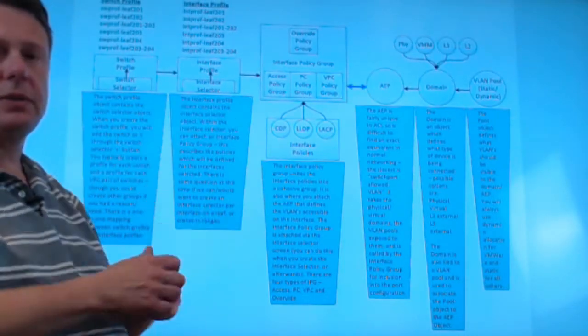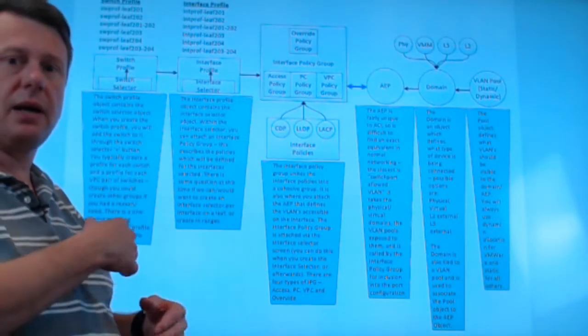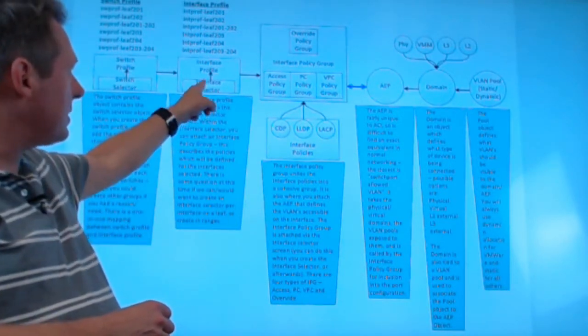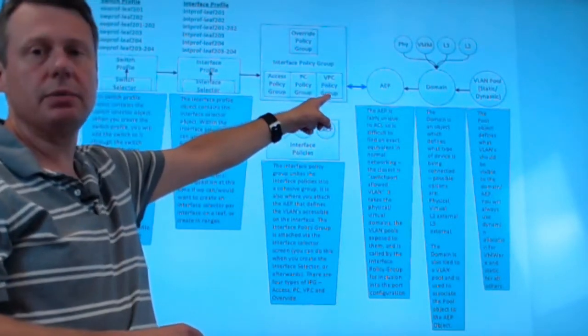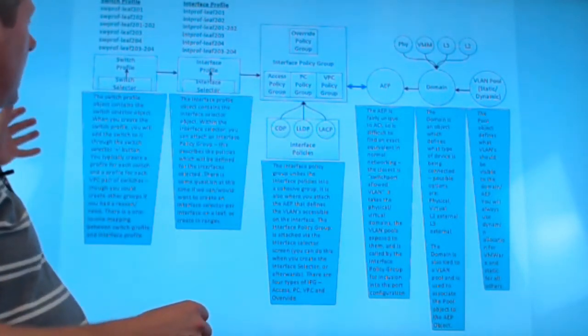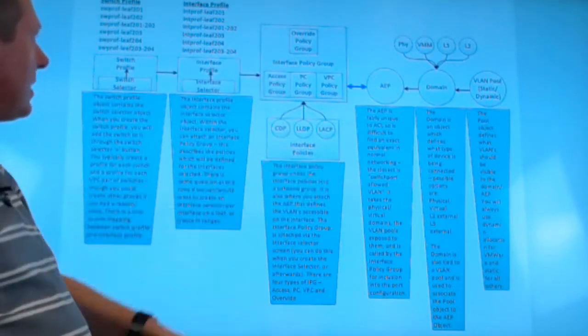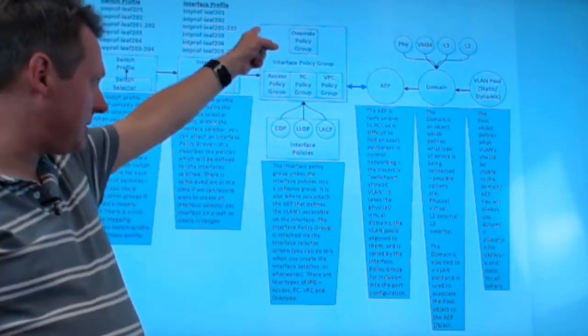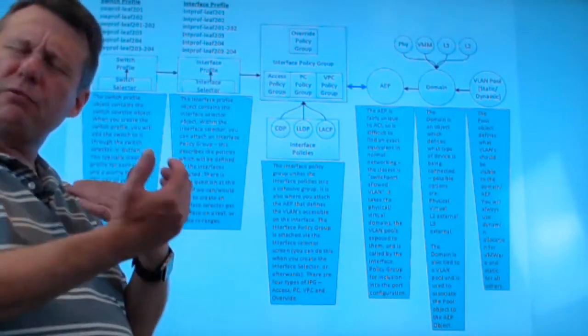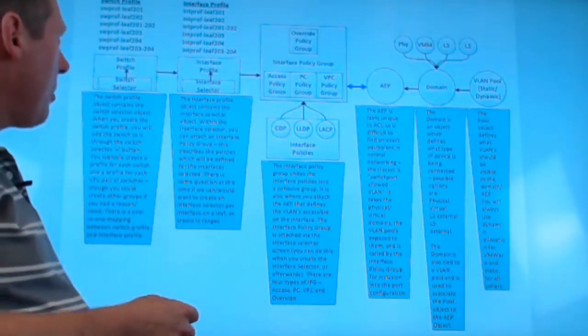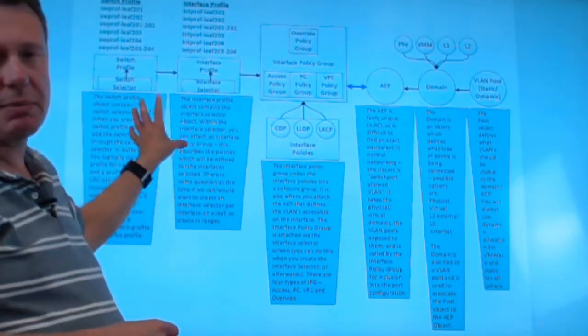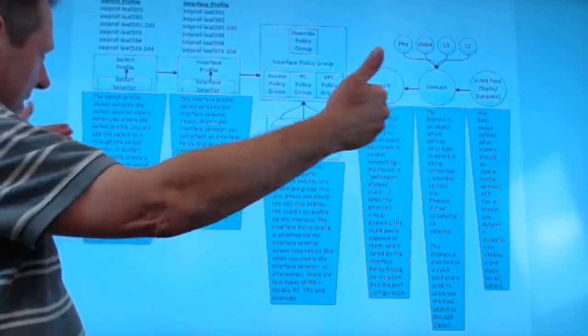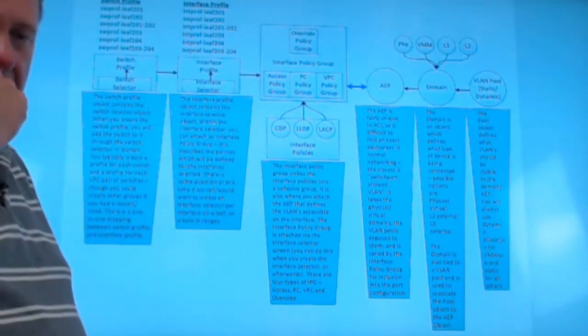On my interface selector, so let's say it was port six on leaves 203, 204 again. I go back into this interface selector and I call this VPC policy group. And now you can see how in the end, everything gets tied together. Although I have the policy group and interface policies in the center, they're not really in the center per se. But I find that for most of my clients, this is a nice, easy way to start thinking about this process. Because they do tend to meet there in terms of how the GUI is configured.